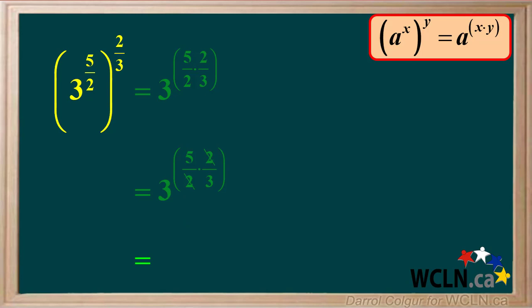So, 3 to the power of 5 over 2 raised to the power of 2 over 3 is equal to 3 to the power of 5 over 3. We can leave the answer in this form.